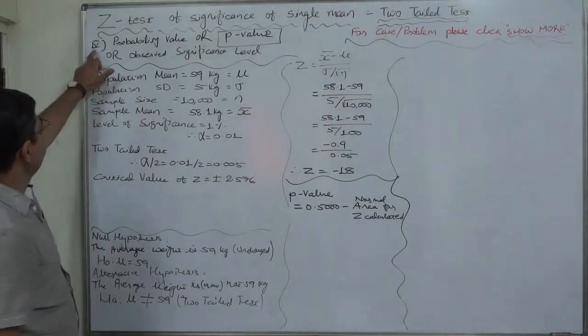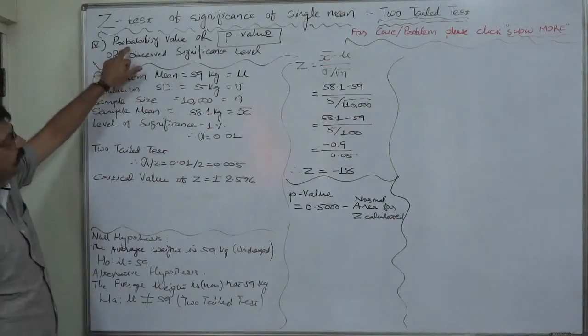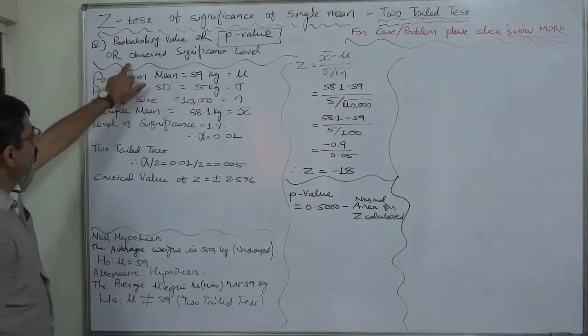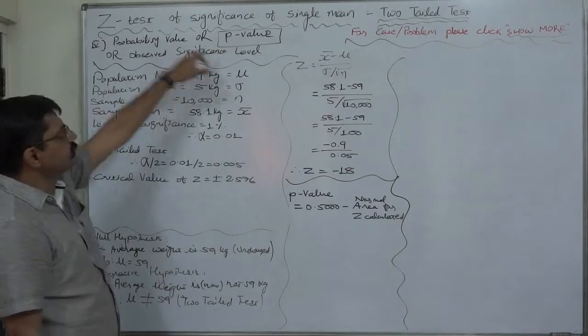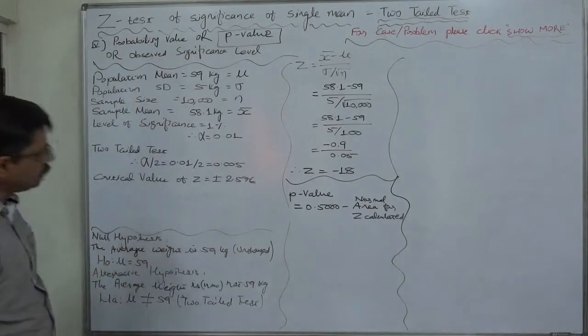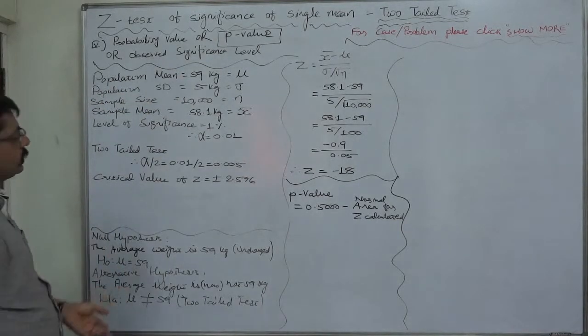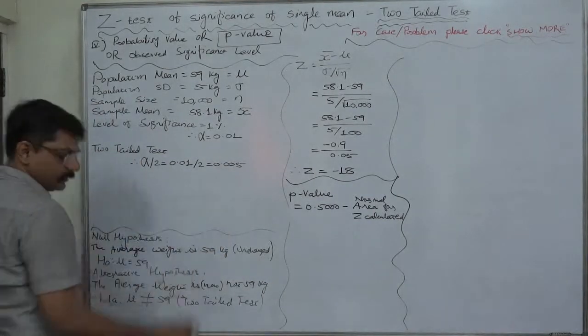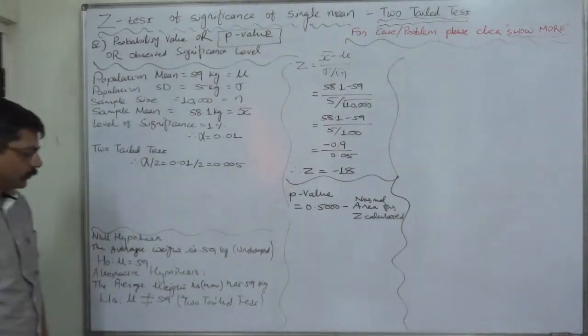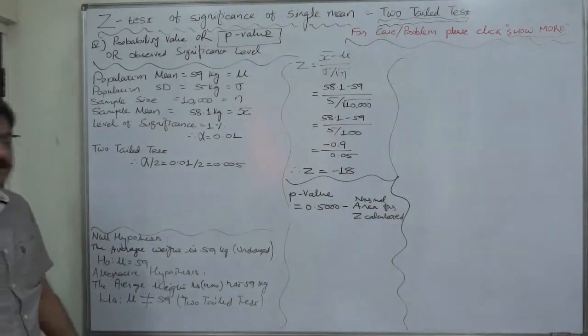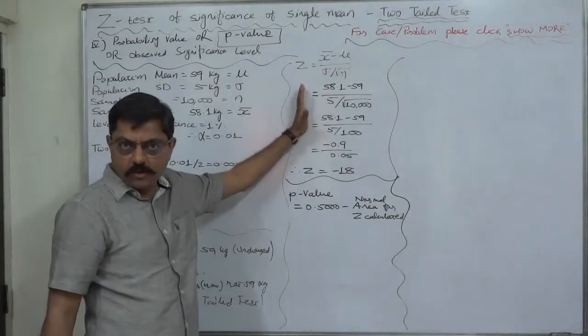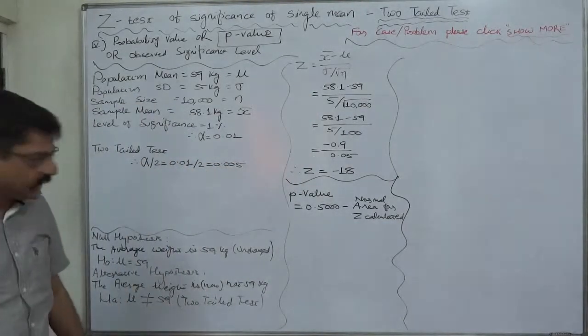Now, this time we are with the method of probability value or popularly known as p-value or it is also known as observed significance level. Actually, when we use, we even don't need the critical value. So, let's remove it. What is p-value and what is the process? The process is same up to calculation of the test statistic or observed value of test statistic.